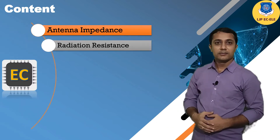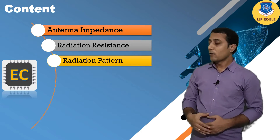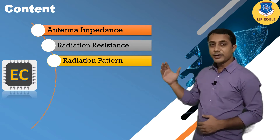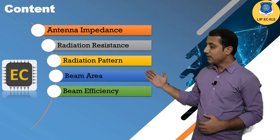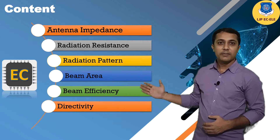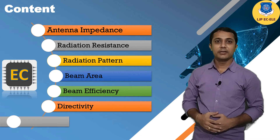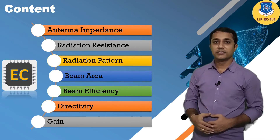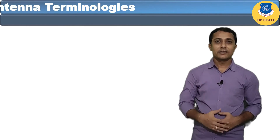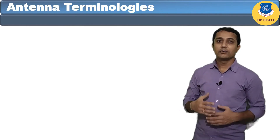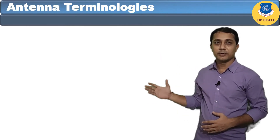The topics covered are: antenna impedance, radiation resistance, what is the radiation pattern of the antenna, beam area, beam efficiency, directivity, and at last we will discuss about gain. So let's get aware of these terminologies one by one.